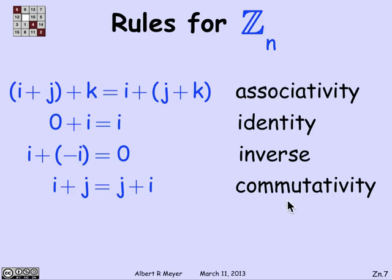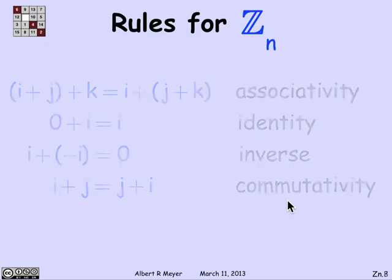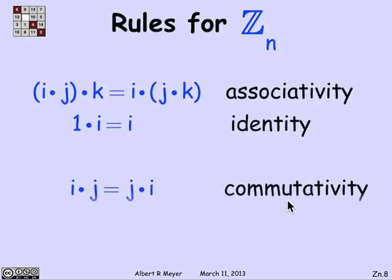You don't really need to memorize these names, but you will probably hear them a lot in various other contexts. These are some of the basic rules that addition satisfies. In fact, multiplication satisfies pretty much the same rules. Multiplication is likewise associative. There's an identity from multiplication called 1. 1 times i is i. Multiplication is also commutative. The one obvious omission here is inverses. You can't count on there being inverses in Z_n.